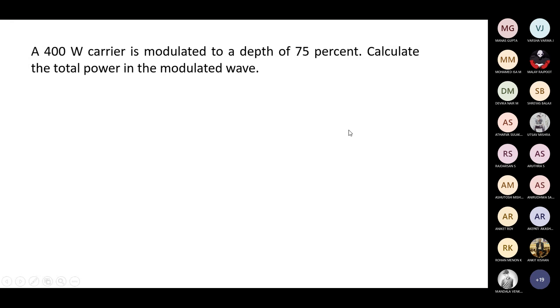In this question, the carrier power is given. A 400 watt carrier is modulated to a depth of 75 percent. Calculate the total power in the modulated wave. So, the carrier power Pc is given, M is 0.75 — the modulation index or modulation depth is given — and we need to calculate the total power.